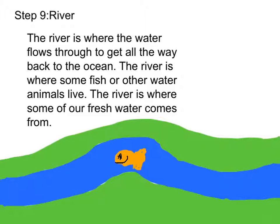Step 9: River. The river is where the water flows through to get all the way back to the ocean. The river is where some fish or other water animals live. The river is where some of our fresh water comes from.